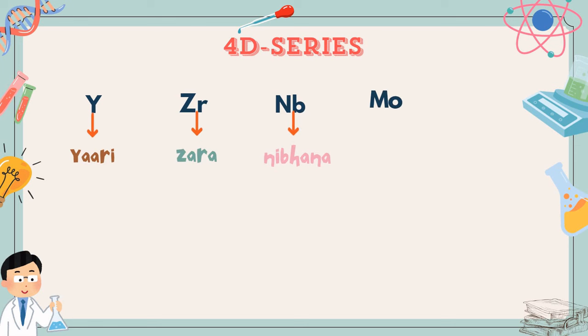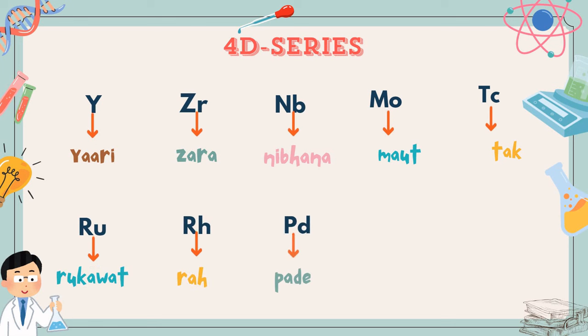Yari, zara, nibhana, mohtak. Rukavat, rah, padhe, aj, kudh. I'll repeat it. Yari, zara, nibhana, mohtak. Rukavat, rah, padhe, aj, kudh. Interesting and easy, right?